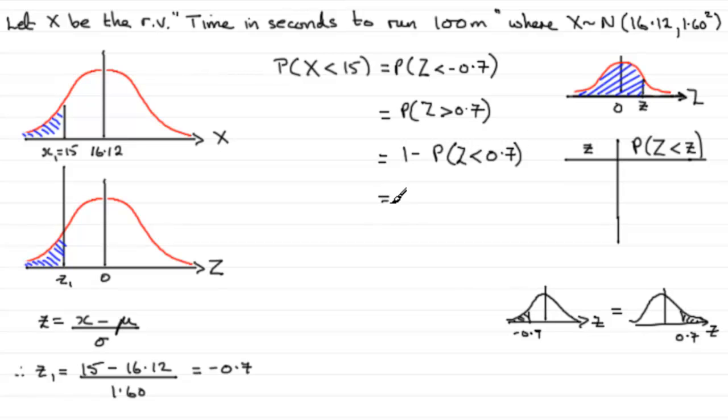So, that gets us now into the tables. We just need to look in our tables where you see z equals 0.7. Look underneath the corresponding row here, and the value that we should get is 0.7580. 0.7580.